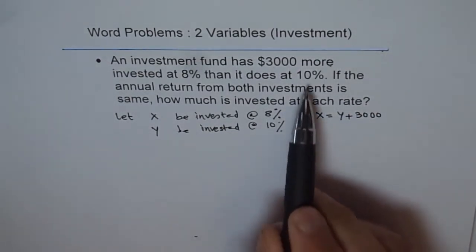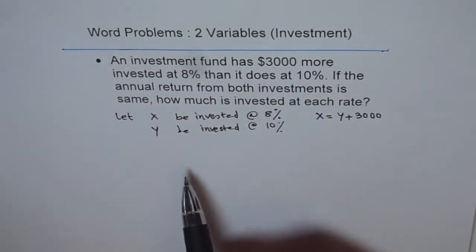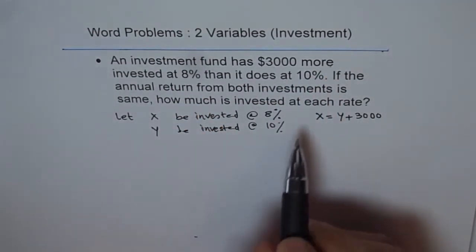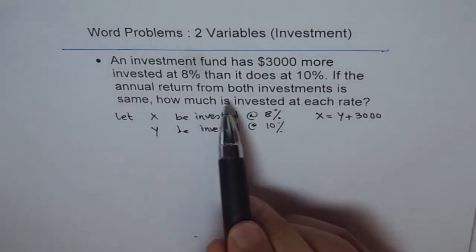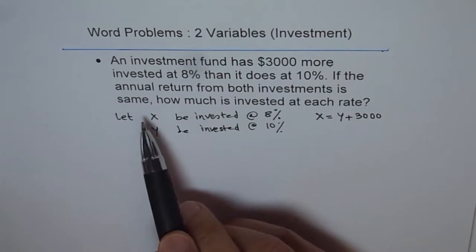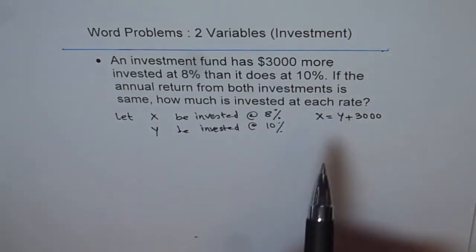Do you see that? $3,000 more invested at 8%. So we get one equation. Now the second equation is, if the annual return from both investments is the same, how much is invested at each rate?